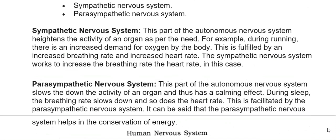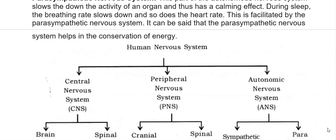The sympathetic nervous system heightens the activity of an organ as per need. For example, during running, there is an increased demand for oxygen, which is fulfilled by increased breathing rate and heart rate — the sympathetic nervous system works to increase these. The parasympathetic nervous system slows down organ activity and has a calming effect. During sleep, breathing rate and heart rate slow down, facilitated by the parasympathetic nervous system, which helps in the conservation of energy.